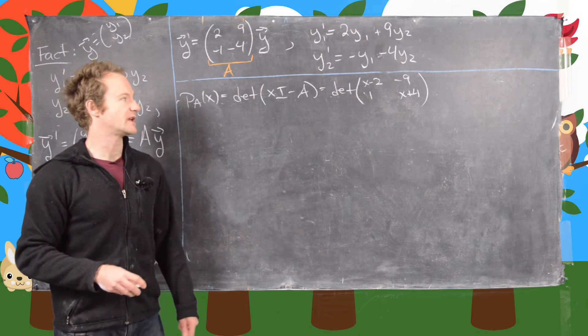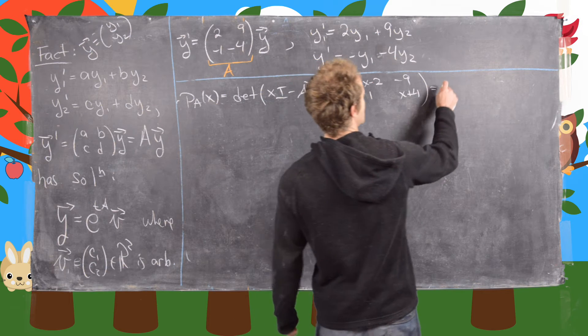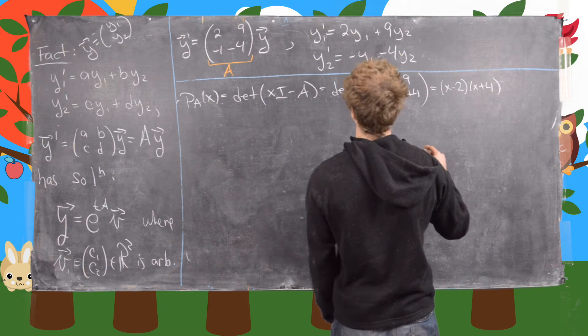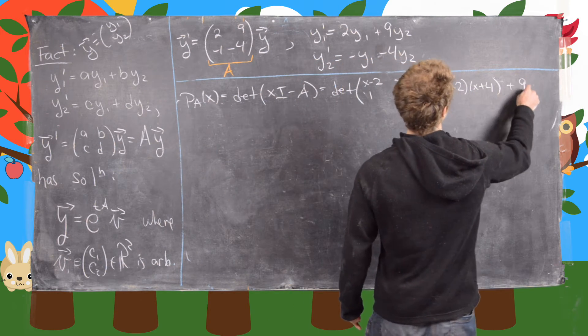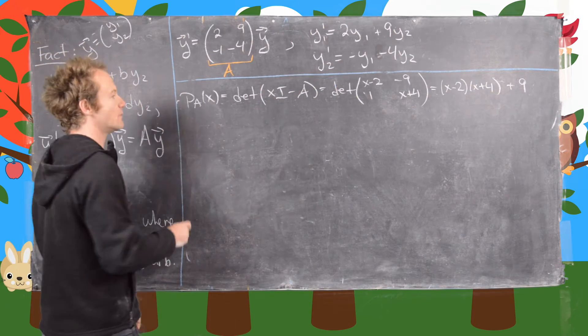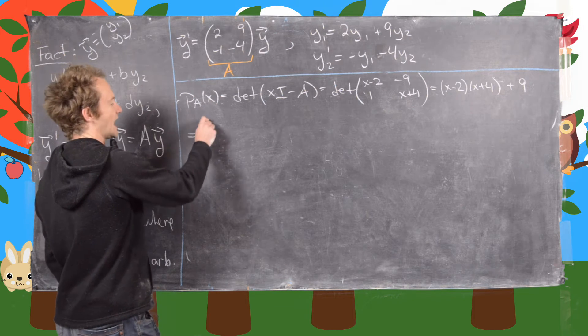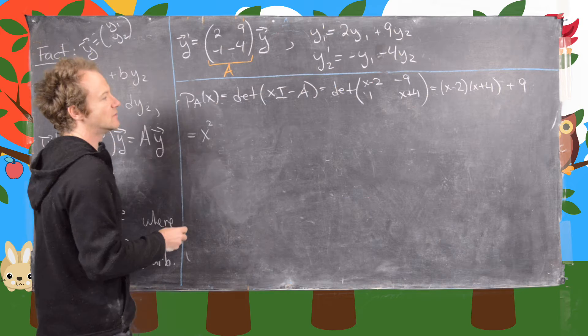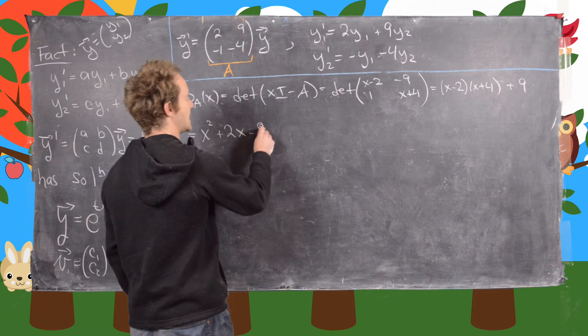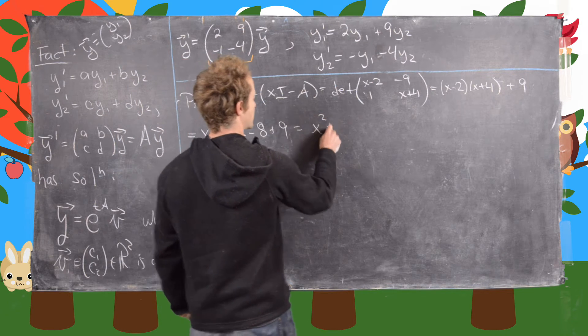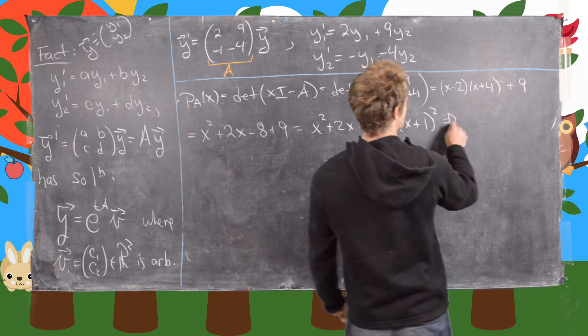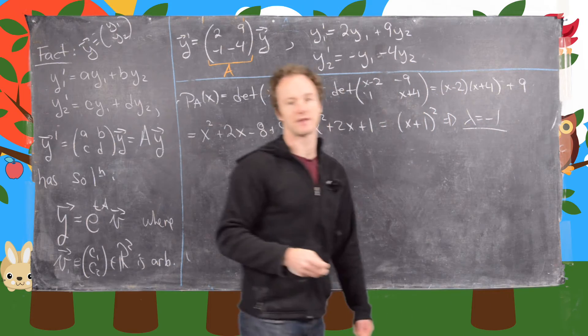So let's see what we get from there. So we're going to have x minus 2 times x plus 4, and then that is going to be plus 9. So now when we multiply that out, we're going to get that's equal to x squared. We'll have minus 2x plus 4x, so that's going to be plus 2x. And then we're going to have minus 8 plus 9, so that's going to be x squared plus 2x plus 1, which factors to x plus 1 squared, which tells us we have a single eigenvalue of lambda equals minus 1.